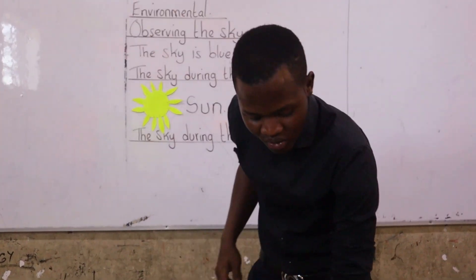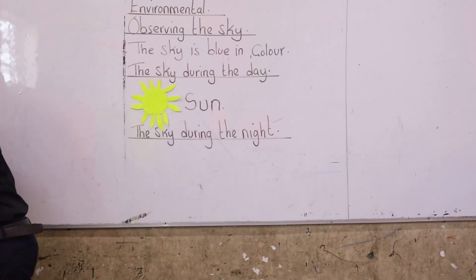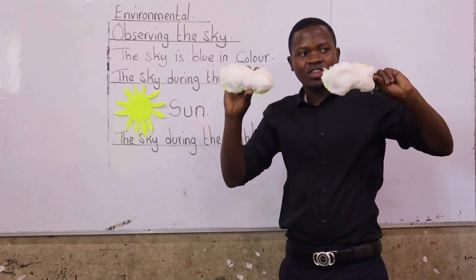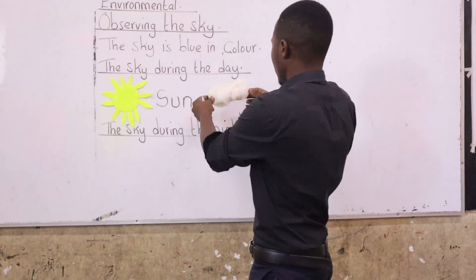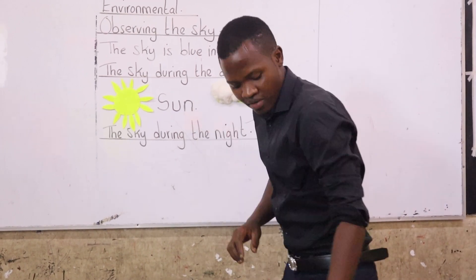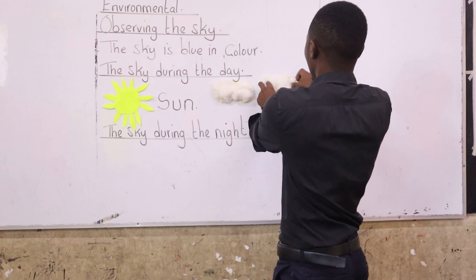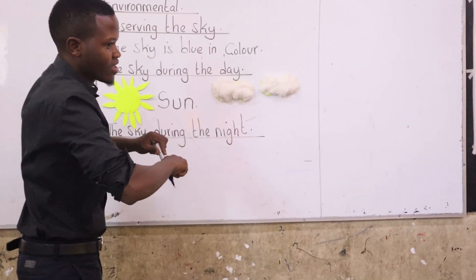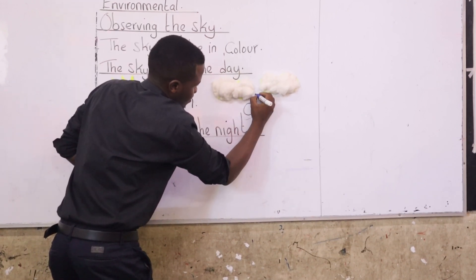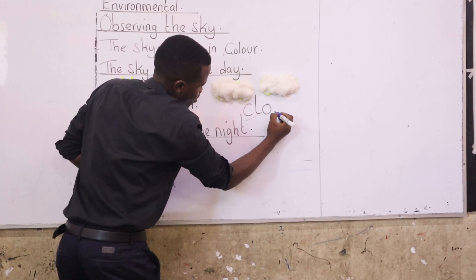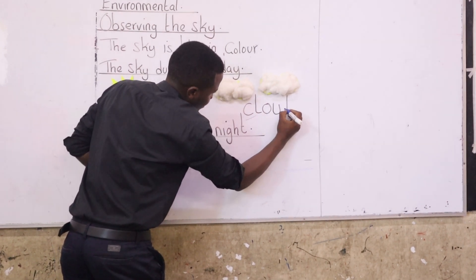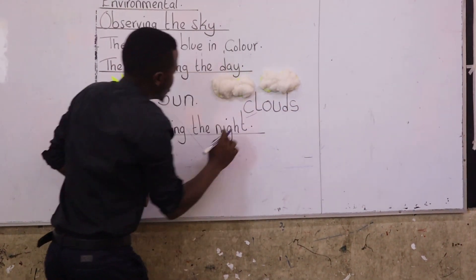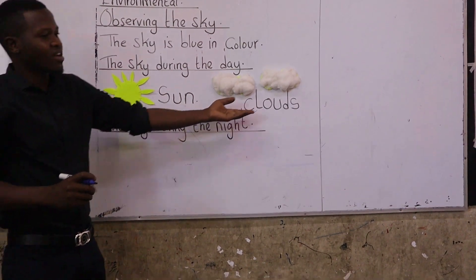Also, when you look at the sky during the day, you will see something that looks like this. What are these? Clouds. So we have the clouds that can be seen during the day. And how do you read the name cloud? C-L-O-U-D. But now these ones — how many clouds do we have here? Two. So we say clouds. During the day we have the sun and the clouds.